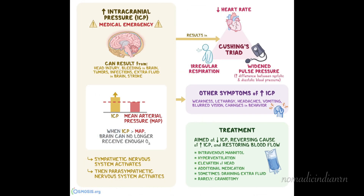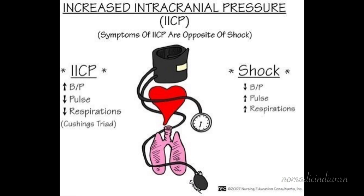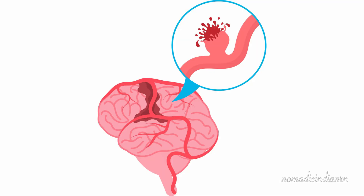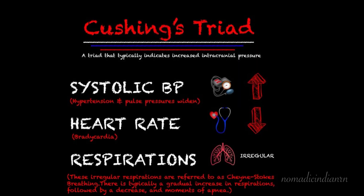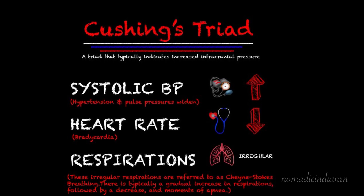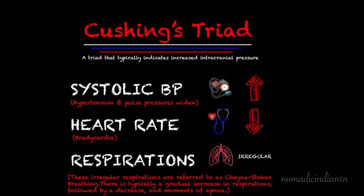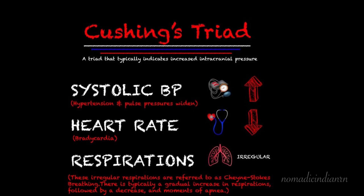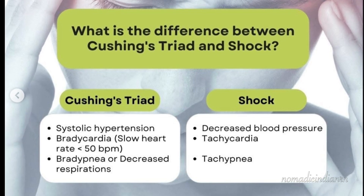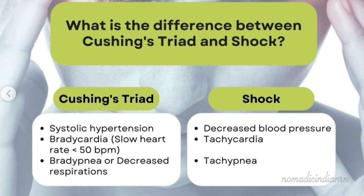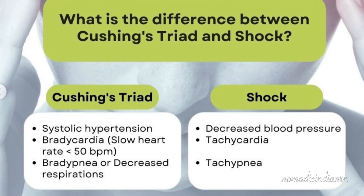Now let's discuss increased intracranial pressure, or ICP — the NCLEX must-knows. ICP is a life-threatening emergency seen in traumatic brain injury, strokes, meningitis, and brain tumors. You'll need to recognize the signs before brain herniation occurs. Cushing's triad is very important: it includes hypertension with widening pulse pressure, bradycardia with slow heart rate, and irregular respirations, also known as Cheyne-Stokes breathing. NCLEX tip: think of Cushing's triad as the opposite of shock. In shock there is low blood pressure and high heart rate, whereas in increased ICP there is high blood pressure and low heart rate.